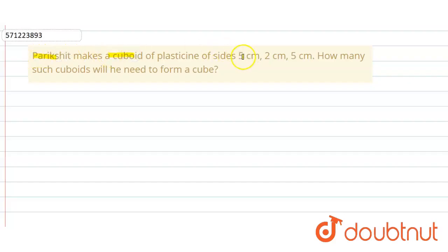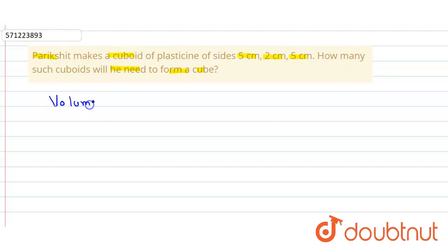In the given question, Prekshet makes a cuboid of sides 5 centimeter, 2 centimeter and 5 centimeter. How many such cuboids will he need to form a cube? So here we know that the volume of the cuboid will be equals to...